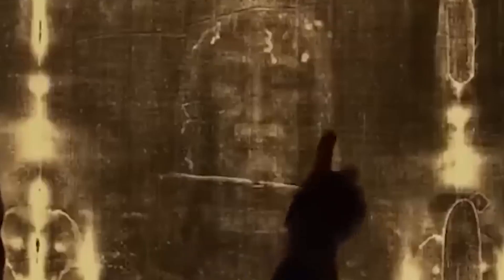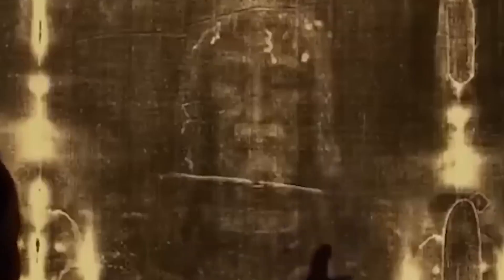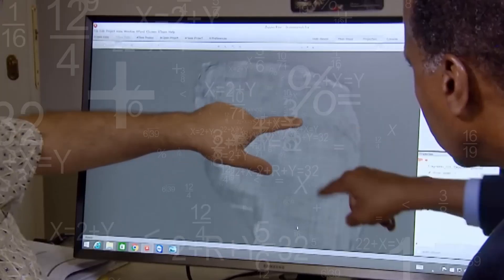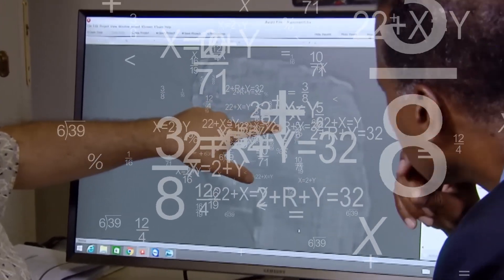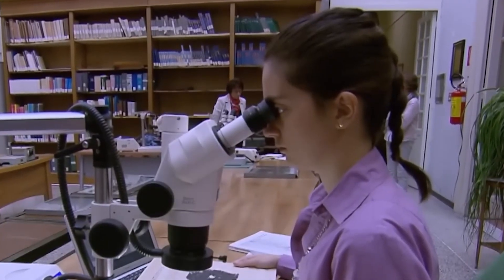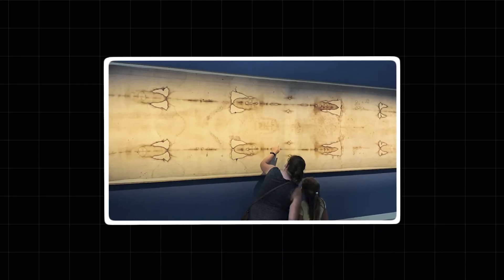The AI detected a hidden layer of information embedded in the cloth, something completely separate from the visible image of the man. It's a highly complex, repeating geometric pattern, a mathematical signature, or code, encoded at a microscopic level. This isn't paint. It isn't a scorch. It appears to be a form of information, and it's woven into the very structure of the fibers.